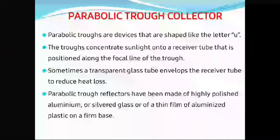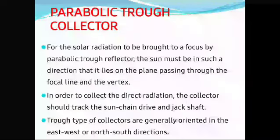Sometimes a transparent glass tube envelops the receiver tube to reduce heat loss. Parabolic trough reflectors are made of highly polished aluminum, silvered glass, or a thin film of aluminized plastic on a firm base. For solar radiation to be brought to a focus by a parabolic trough collector, the sun must lie in the plane passing through the focal line and the vertex.